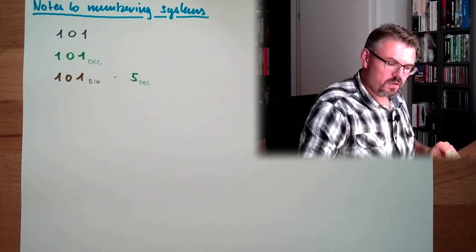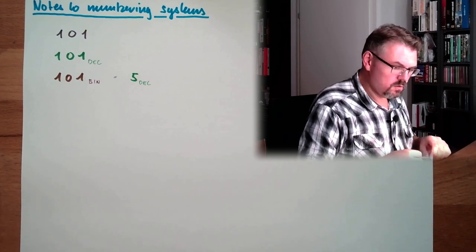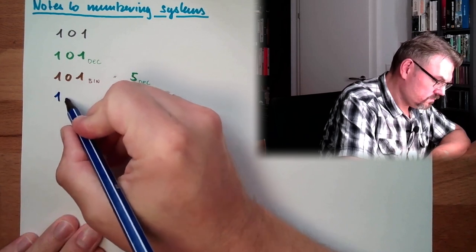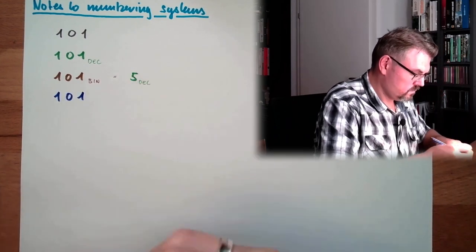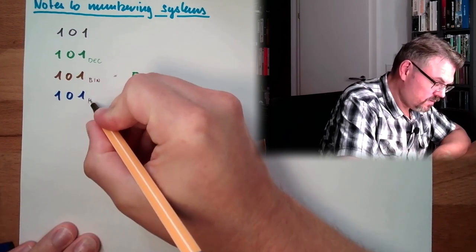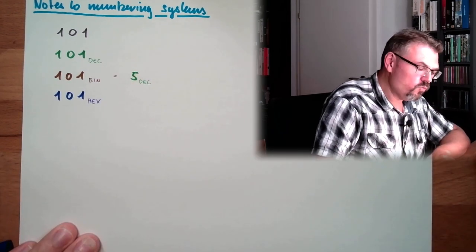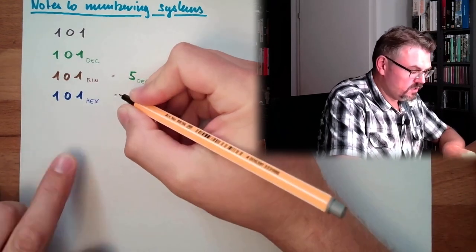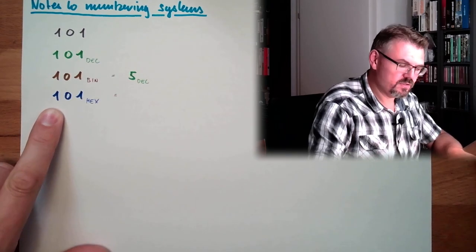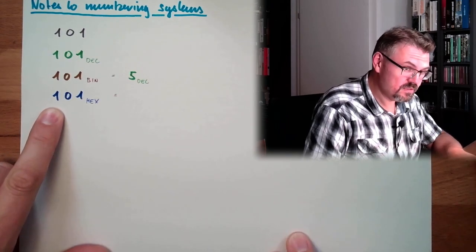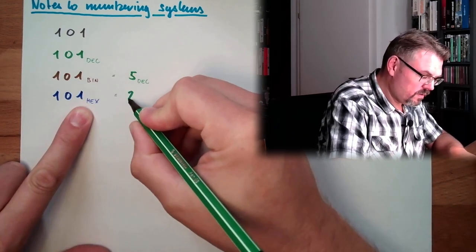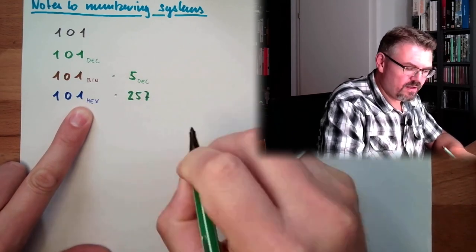And what if 101 would be a hex number, hexadecimal number? What would that be? So this is 1, this is 16, and this is 256. So it's 1 times 256 and 1 times 1. So we have 257 in decimal.